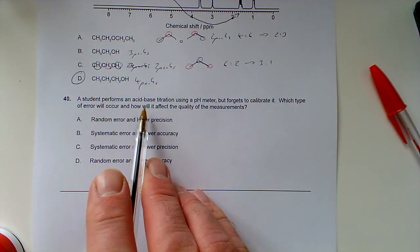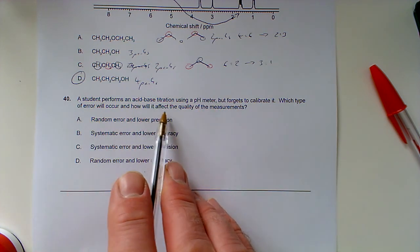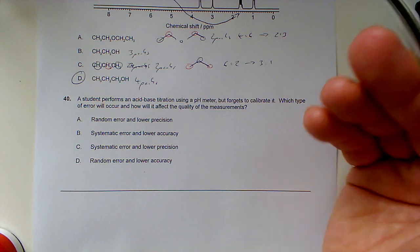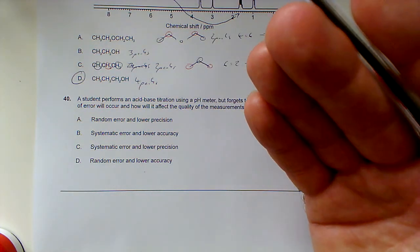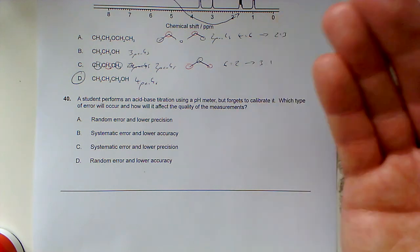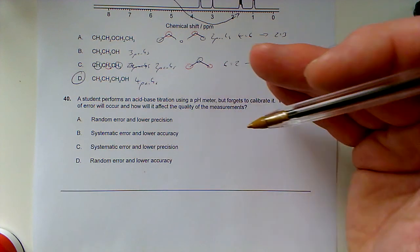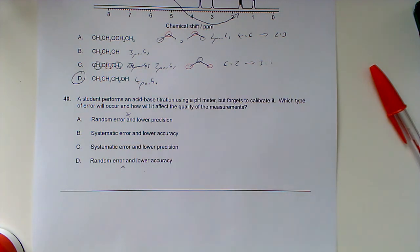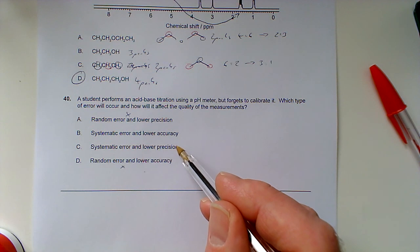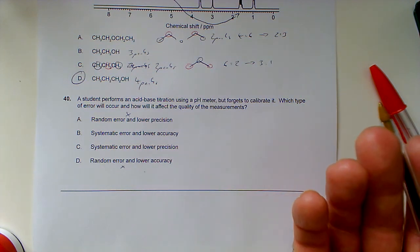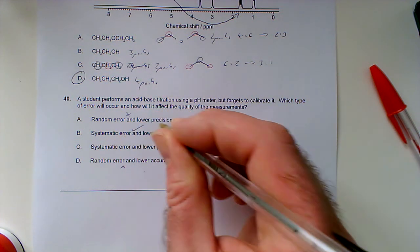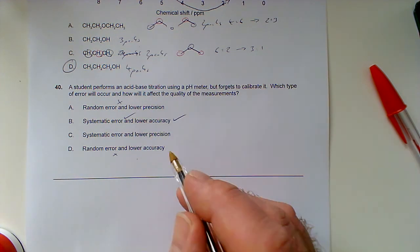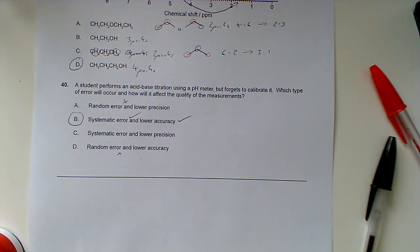Number 40: A student performs an acid-base titration using a pH meter but forgets to calibrate it. Which type of error will occur and how will it affect the quality? If he's forgotten to calibrate it, his pH is always one unit higher than it should be. That means it's a systematic error because it always operates in one direction. If the pH meter is incorrectly calibrated, that's going to be consistent. His precision should be pretty good—he should get the same results every time, they just won't be particularly accurate. So systematic error and lower accuracy—that's B. That's the end of that paper, folks. Hope you found that useful.